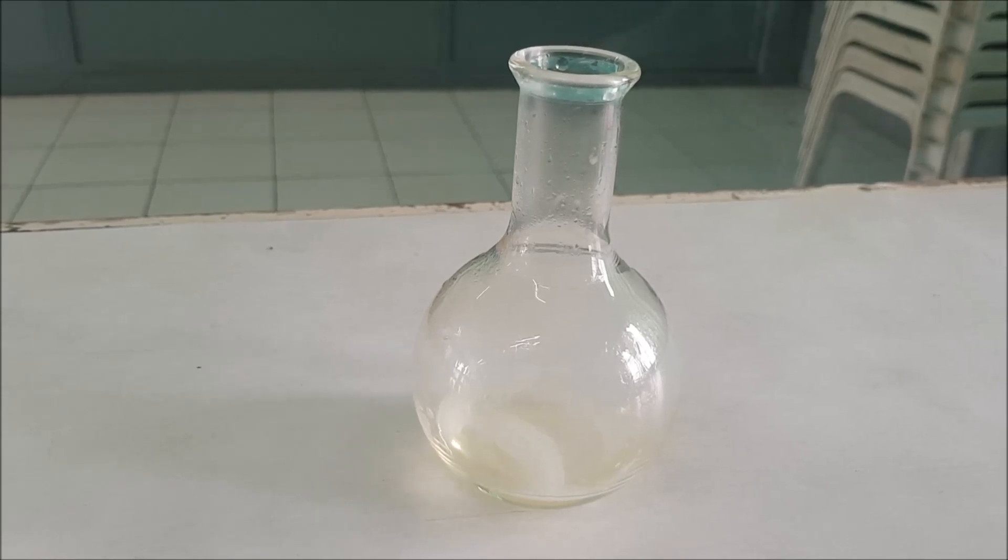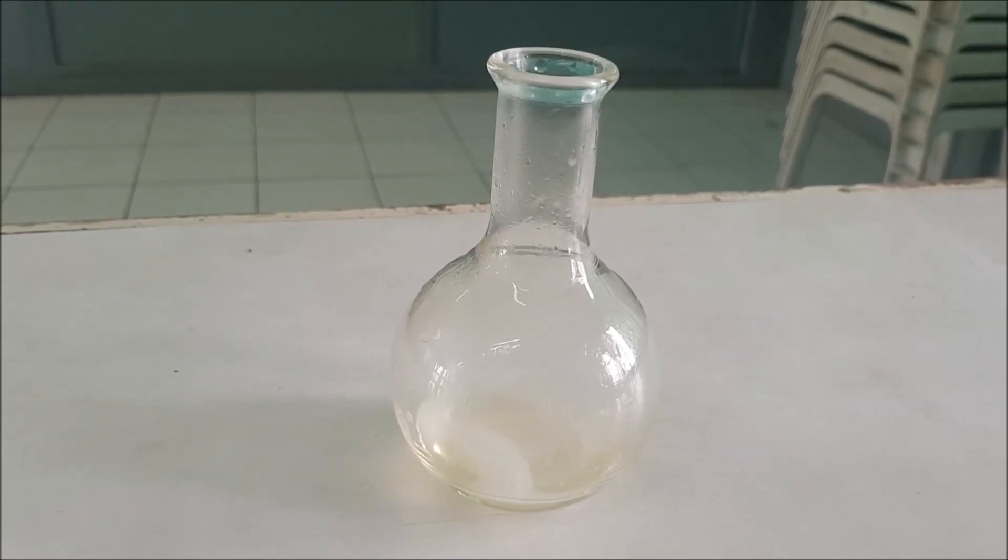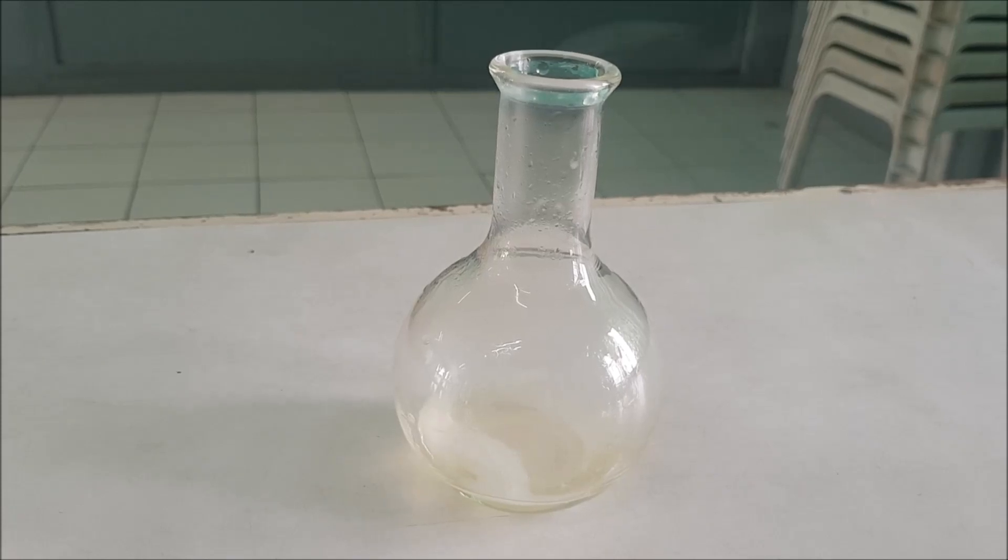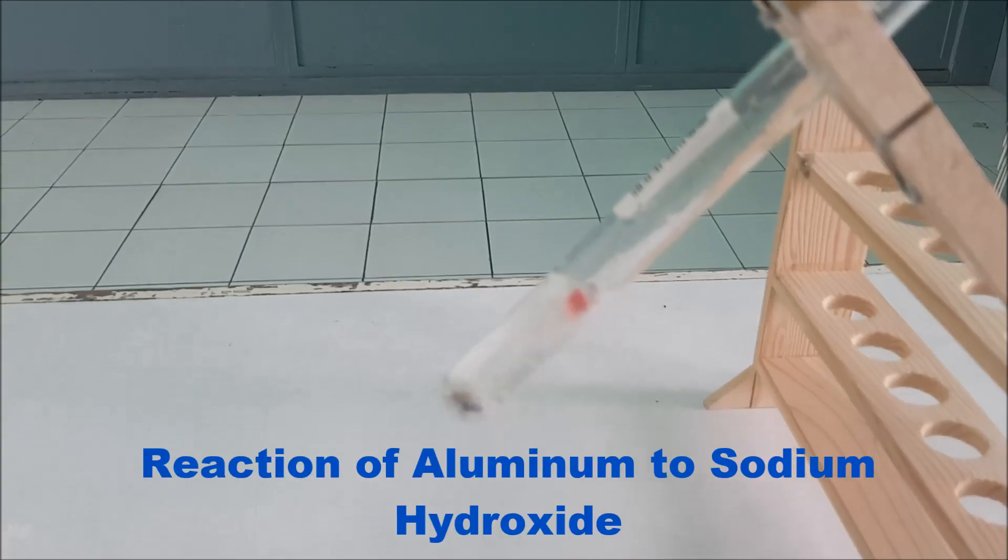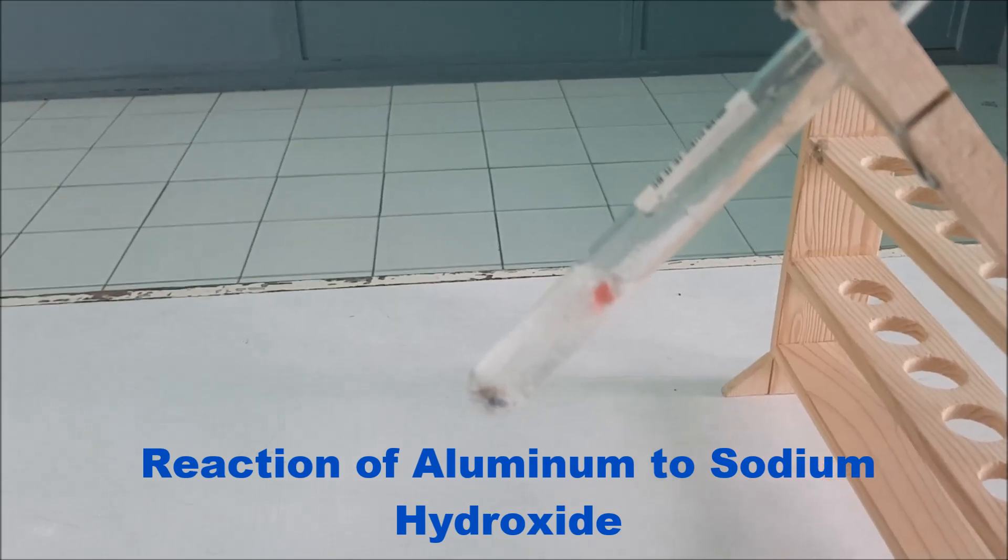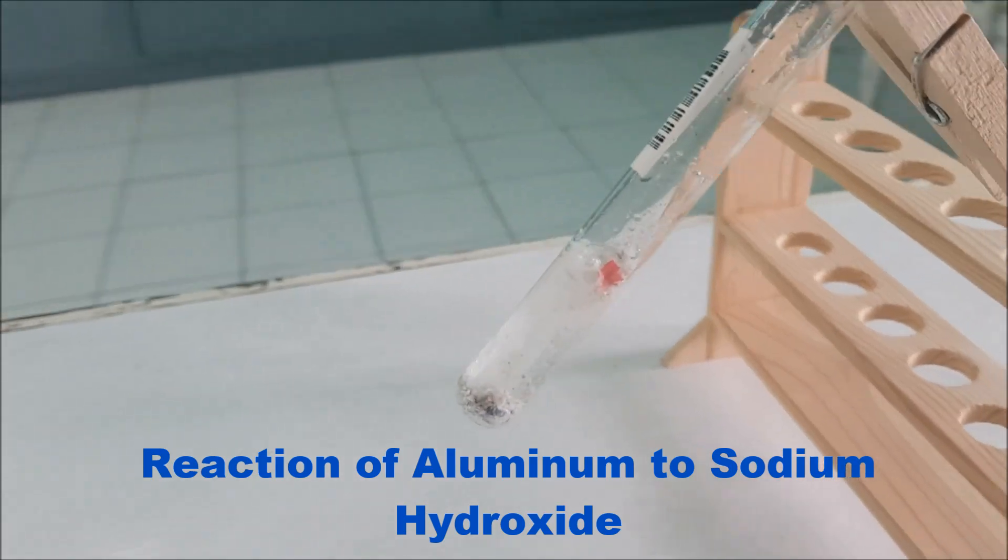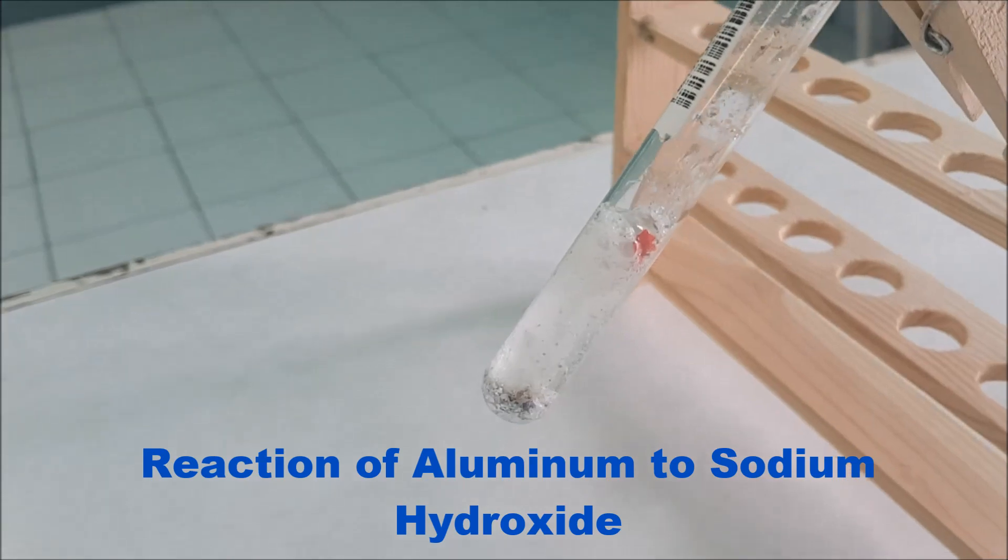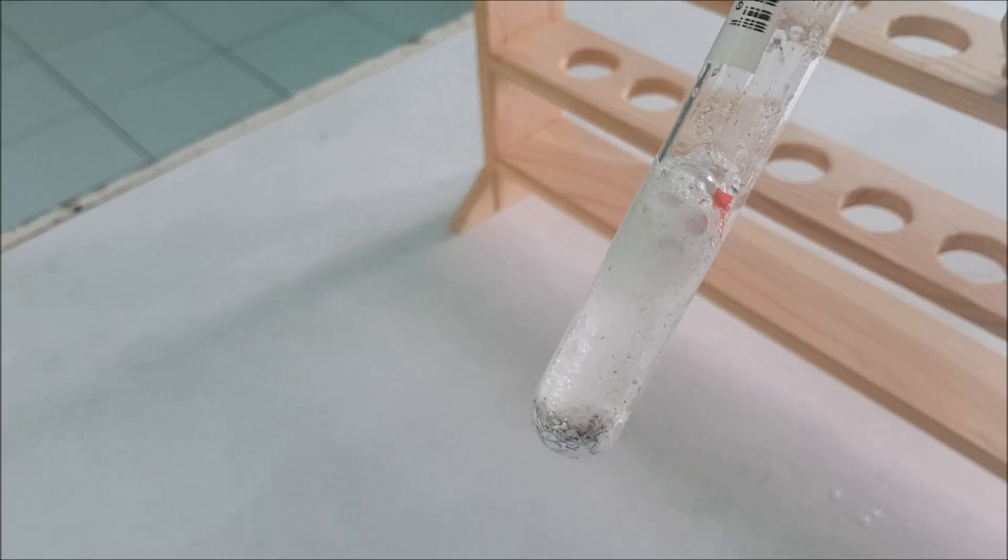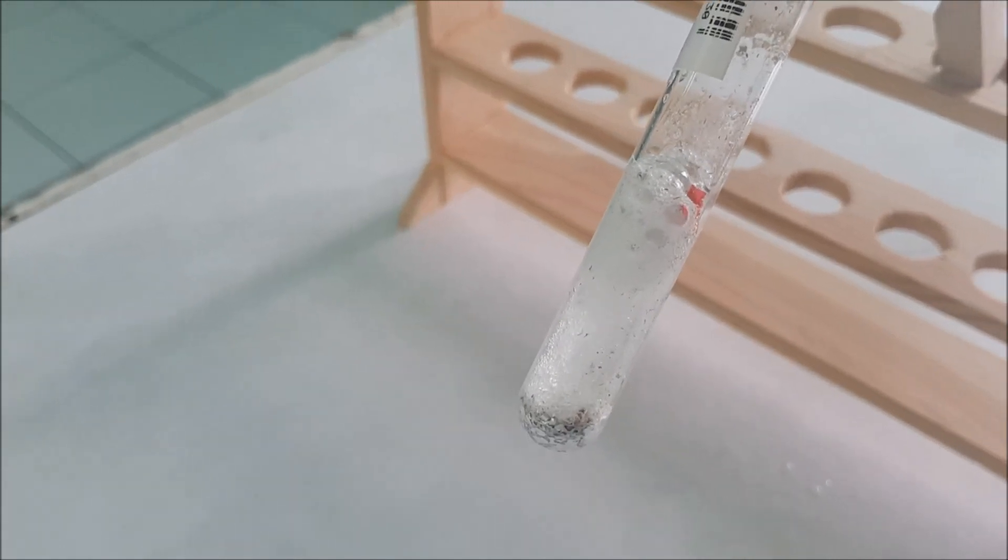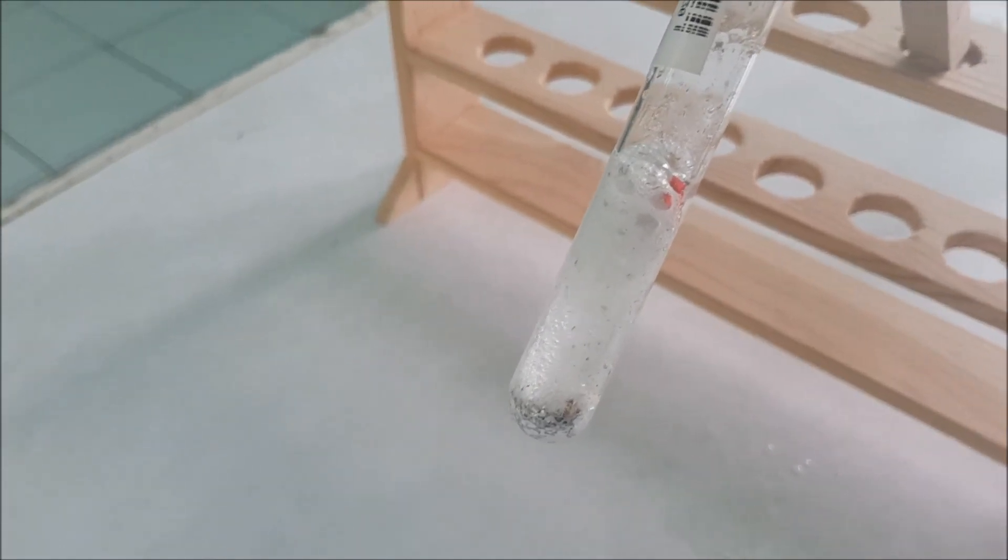Another example is another type of metal also. We have here aluminum. The reaction of aluminum to sodium hydroxide. Aluminum also is a type of metal. When you add sodium hydroxide to aluminum, there is a reaction.